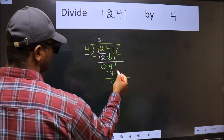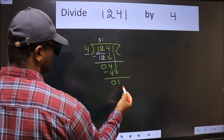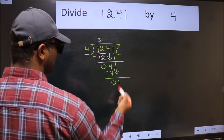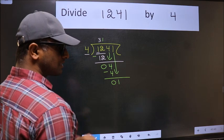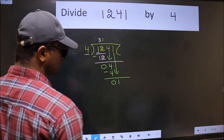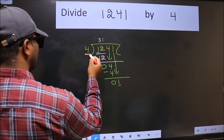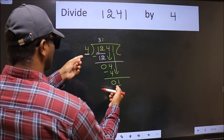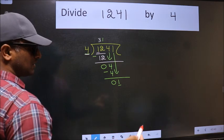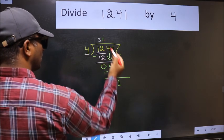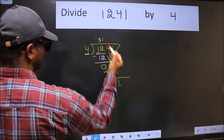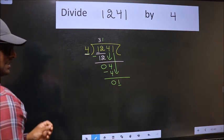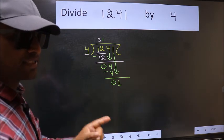After this, bring down the beside number. So, 1 down. After this step, the mistake happens. And the mistake is this: here we have 1 and here 4. 1 is smaller than 4. So what many do is they directly put a dot and take 0. Which is wrong.